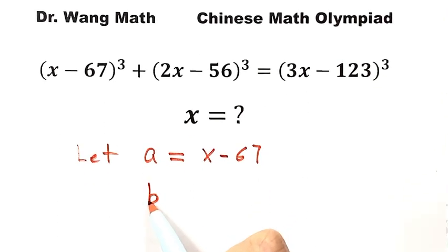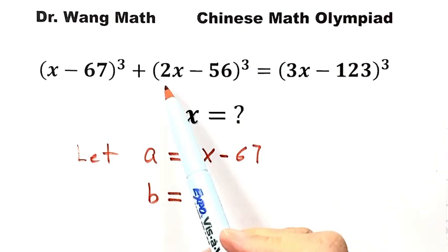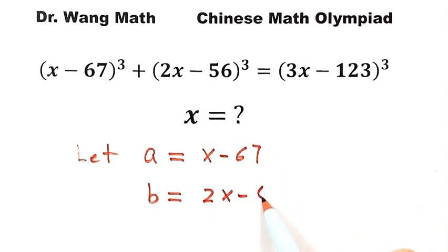Then let b equals this part, 2x minus 56.